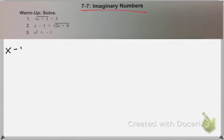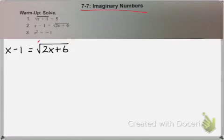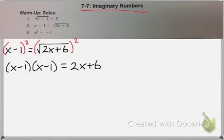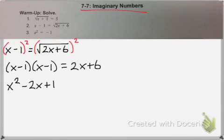For number 2, same idea — we are going to square both sides to get rid of the square root. Just remember when you square both sides, you need to put parentheses around the x minus 1, which means you are going to have to foil it out. So this becomes x squared minus 2x plus 1. I just did foil, or box method if you prefer.